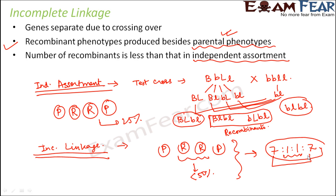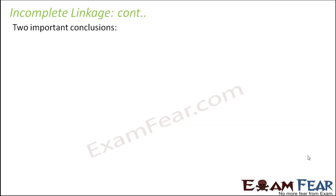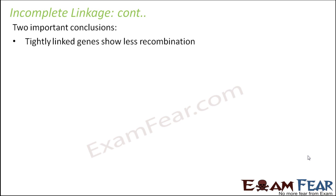By now it should be clear to what extent Mendel's principles were correct and what the modifications were. Two important conclusions: tightly linked genes show less recombination. Tightly linked means the genes are very close to each other on the same chromosome, nearing towards complete linkage — so there will be less recombination.